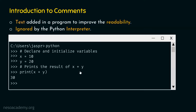In this example, I have written two comments. Every comment is preceded by a hash symbol — first we type hash, then the text we want to add. Here I have typed 'declare and initialize variables' because the next two lines are all about that. I want to indicate what those lines are about, so I have written this comment. I declared two variables x and y and initialized them with values 10 and 20 respectively.